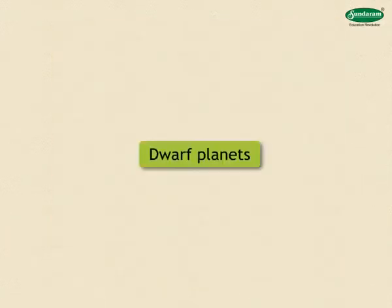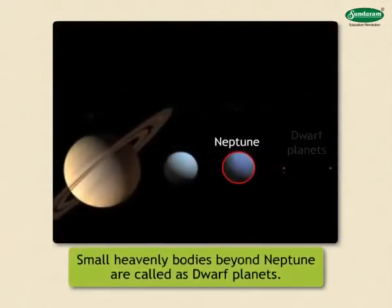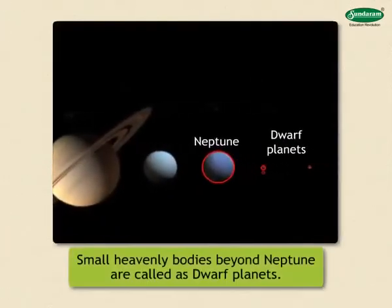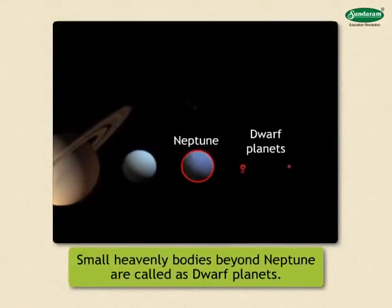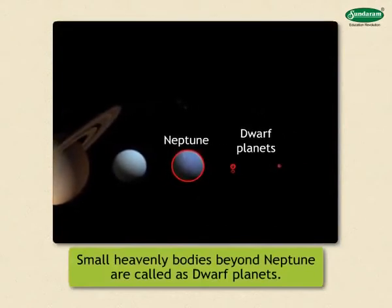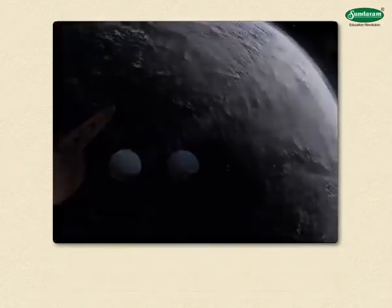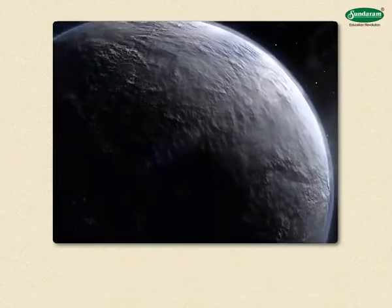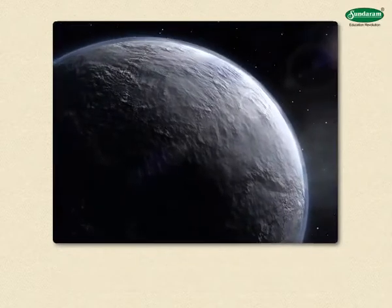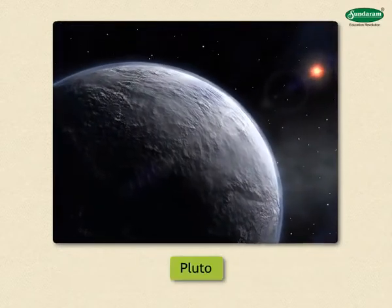Dwarf planets. Beyond Neptune, there are some small heavenly bodies which revolve around the sun. They are called dwarf planets. They include celestial bodies like Pluto.